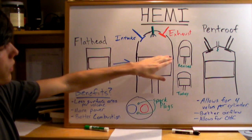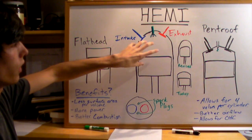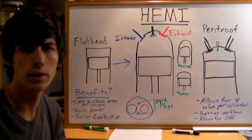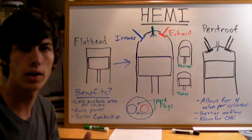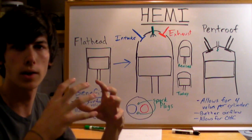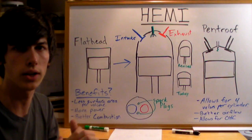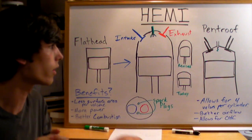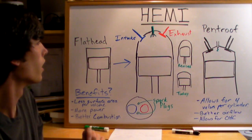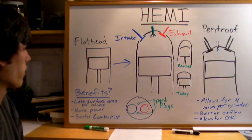The Hemi is a hemispherical cylinder head — that's where the name originates. What it does is maximize volume and minimize surface area. The reason you want to do this is because with a minimal surface area, you can lessen the amount of heat that you lose. All that surface area is going to absorb heat in combustion, and the more heat it absorbs, the less power your engine has. That heat is what creates the power, so you want to reduce those heat losses.